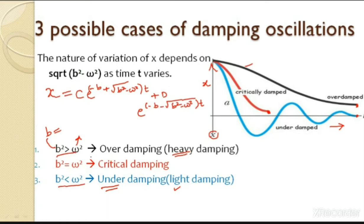The three possible cases are: b² > ω² (over-damping), b² = ω² (critical damping), and b² < ω² (under-damping). The variation of displacement in damped oscillations depends on √(b²−ω²) as time increases. These three cases determine whether the system oscillates, decays without oscillating quickly, or decays without oscillating slowly.